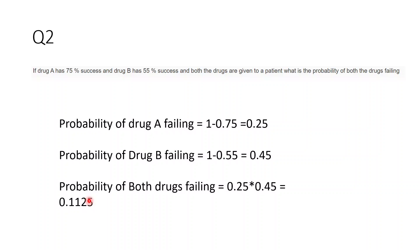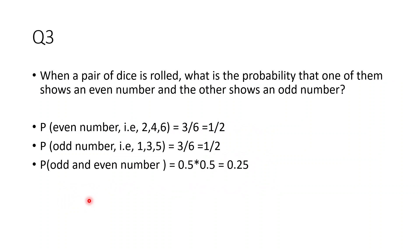You can multiply probabilities of two separate events only when those events are independent of each other. When they are related you need something known as conditional probability, which is not part of this course but can be discussed in the next class if people are interested. It's currently beyond the scope of this course.